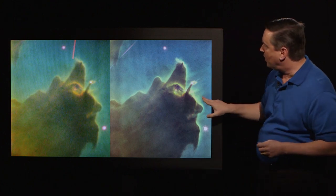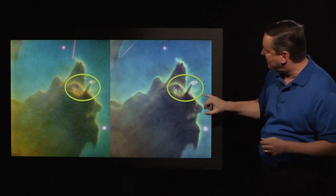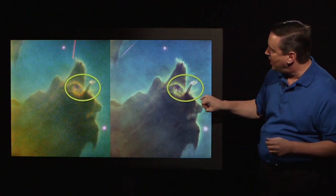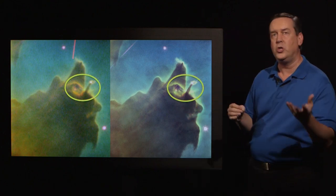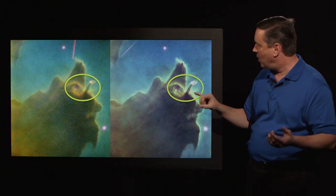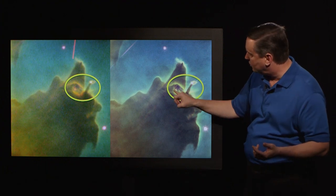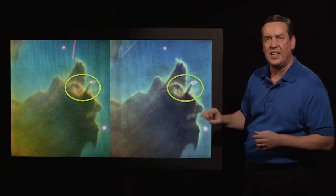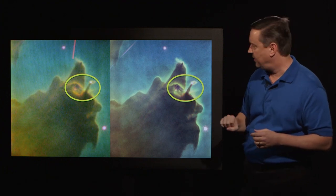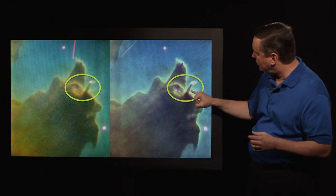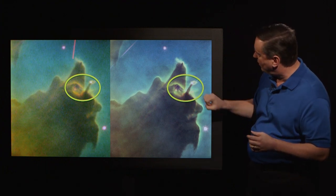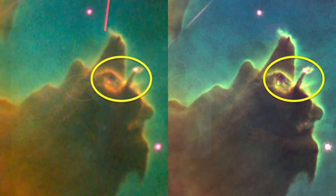The other thing you notice is these regions where there are two stars forming. One of them is sort of in a cavity inside the nebula, and the other one is at the top of a small pillar that sort of resembles a smokestack.